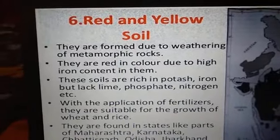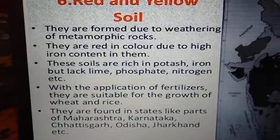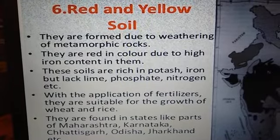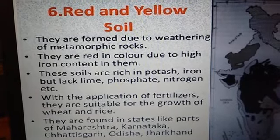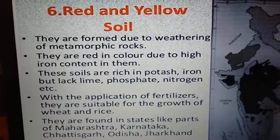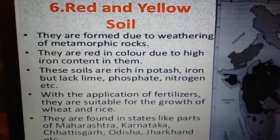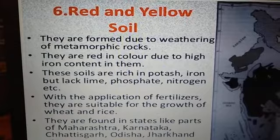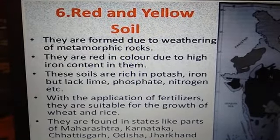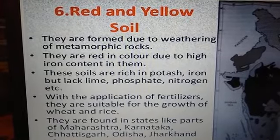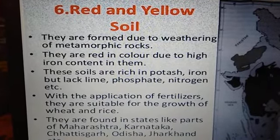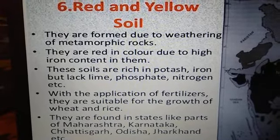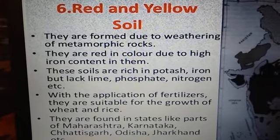Now we are talking about red and yellow soil. They are formed due to the weathering of metamorphic rocks — rocks that change their form, such as igneous rocks converted into metamorphic rocks. When these rocks are weathered, the material formed is red and yellow. They are red in color due to high iron content, specifically ferrous oxide.